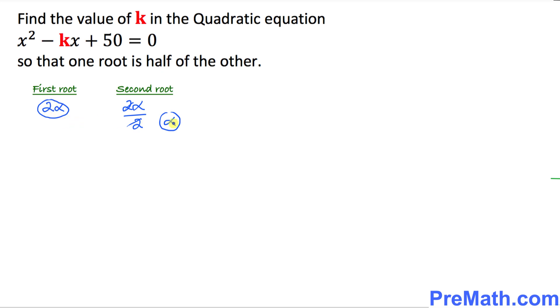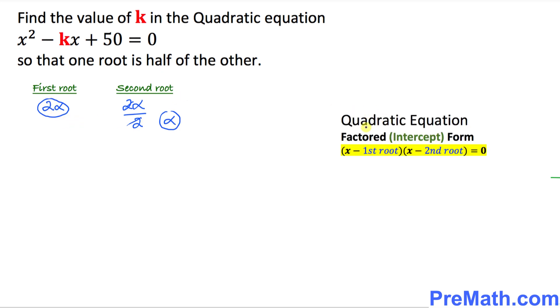We also know that the factored form of any quadratic equation could be written as x minus the first root times x minus the second root equal to 0. So I can write this one as x minus 2 alpha times x minus alpha.